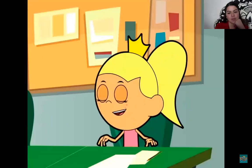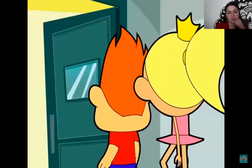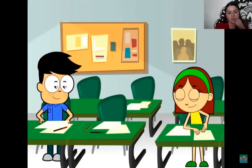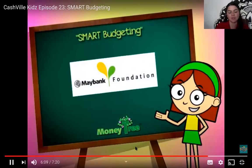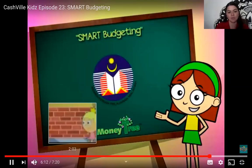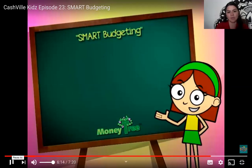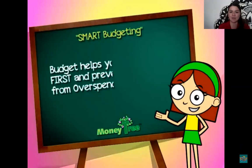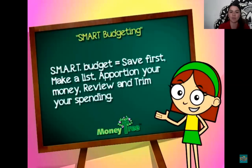In this episode, the students learn a very important tool that will enable them to start on their road to financial success — and that is creating a budget. A budget is your saving and spending plan. With a budget, you will put your money into savings first before you spend. You will know how much you spend every day and can keep track of your money. A budget is important because it helps you pay yourself first, prevents you from overspending, and allows you to prioritize. Smart budgeting means: save first, make a list, apportion your money, review and trim your spending. Start your SMART budget today!